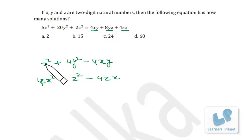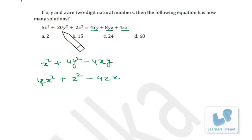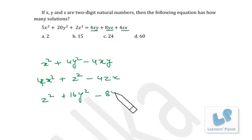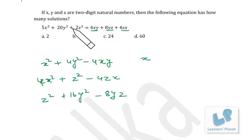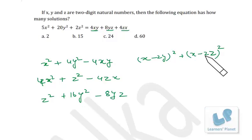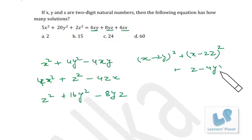So 4X² and X² give us the full 5X². We've used 4Y², and we're left with 16Y² and 1Z². Combining these gives (Z − 4Y)², which accounts for the 8YZ term. Now the entire expression is accounted for.